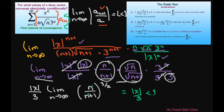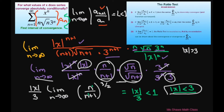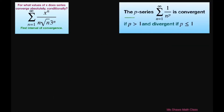We're going to let that be less than 1. Cross multiply and you get absolute value of x is less than 3 for it to converge absolutely. So this is converging. And for it to diverge it would be absolute value of x greater than 3. So we want absolute convergence here. Let's write our interval out. If you have absolute value of x less than 3, by definition that means x is less than 3 but greater than negative 3. So we have to test our endpoints here at x equals 3 and negative 3.